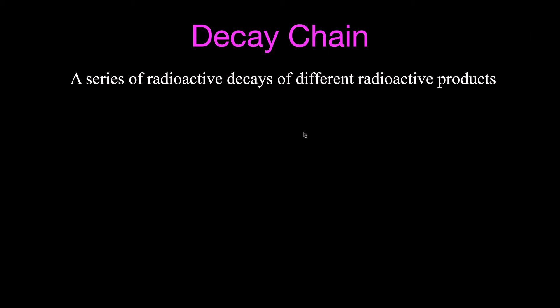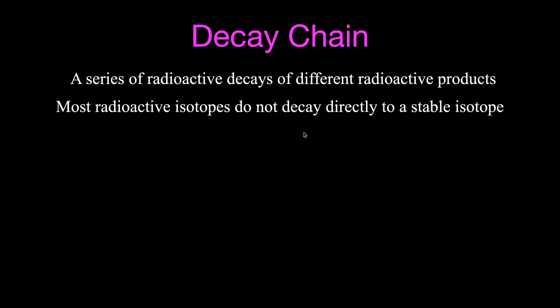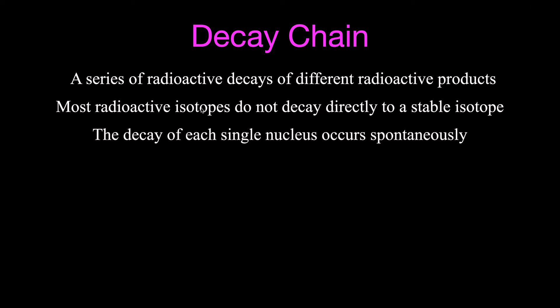A decay chain is simply a series of radioactive decays of different radioactive products. Most radioactive isotopes do not decay directly to a stable isotope — they go through a series of decays involving a series of radioactive isotopes and end up at a stable isotope, which is commonly one of the isotopes of lead. This is sometimes called a decay series.